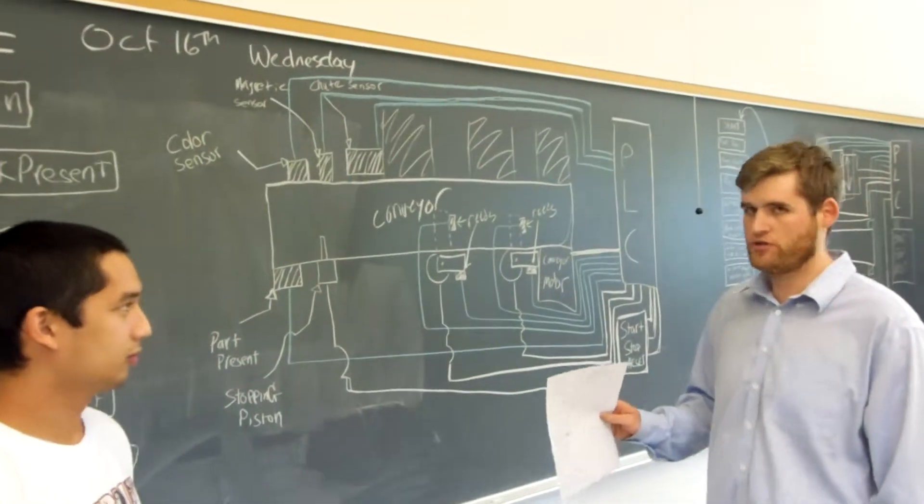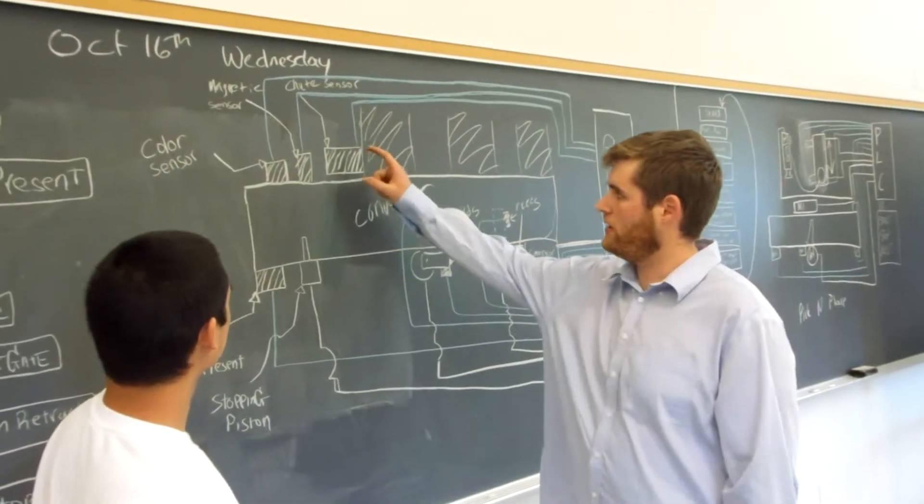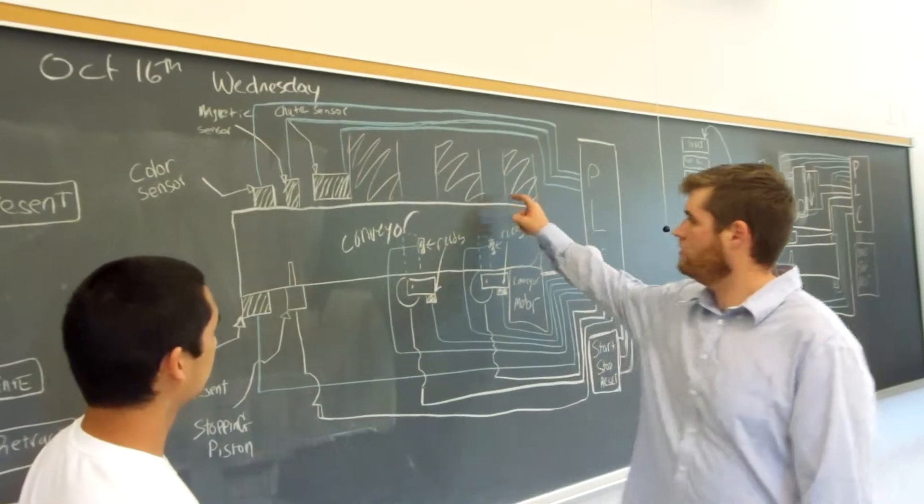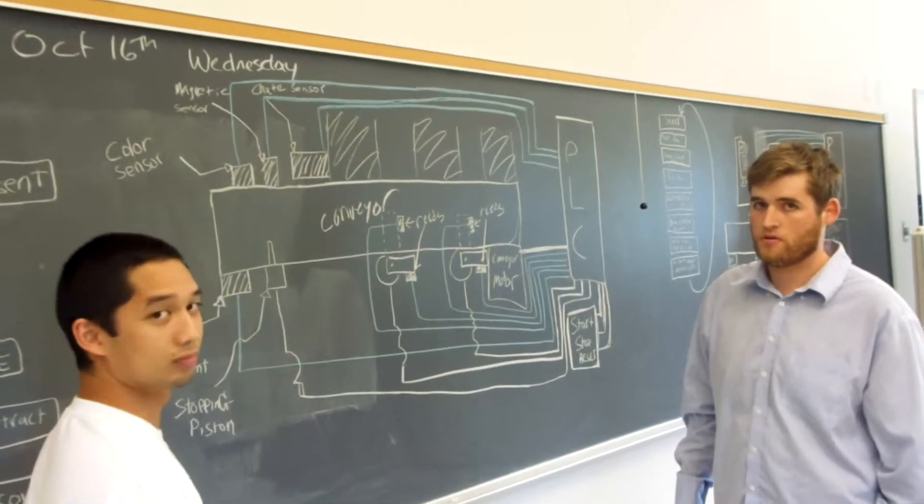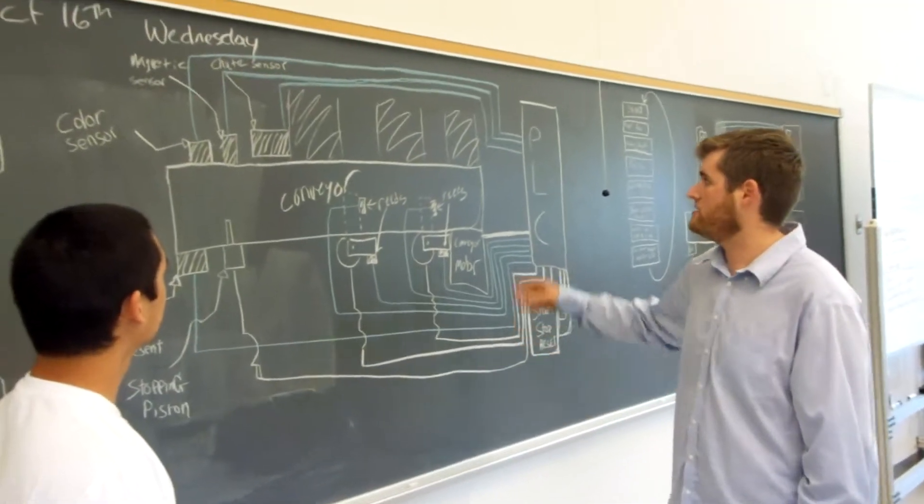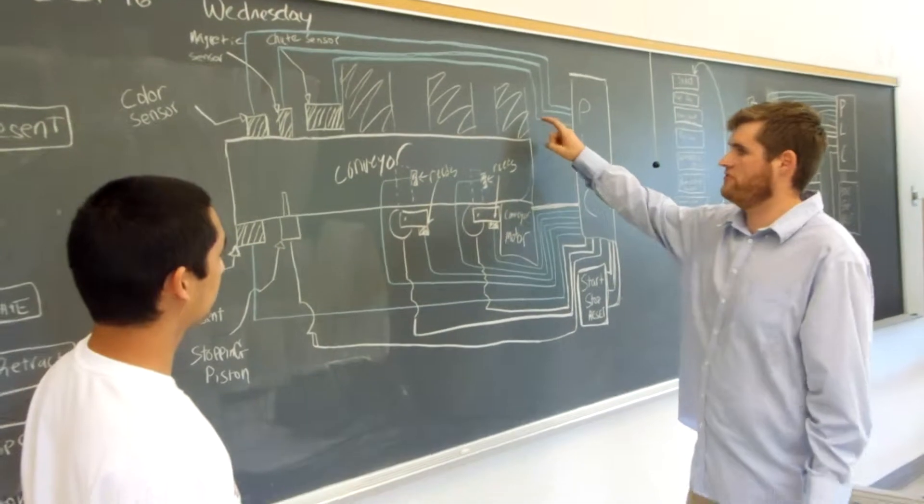It can both detect when an object enters the chute to restart the cycle, and it can also detect when a chute is full to stop. Okay, now I see where your chute sensor is there, and I see where your three chutes are. That chute, I'm guessing there's something else missing. The chute sensor needs a reflective, doesn't it? Yeah, it does have another piece here to reflect on the back, and that is missing from this diagram.